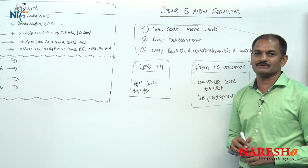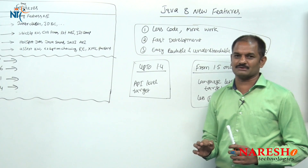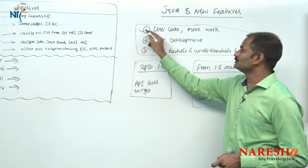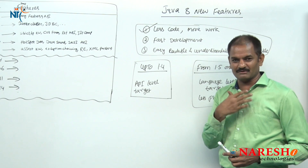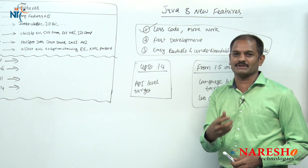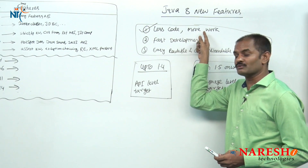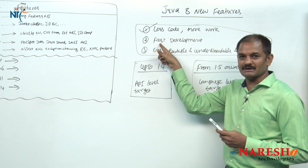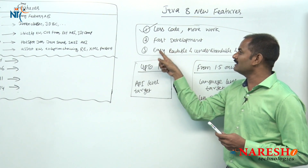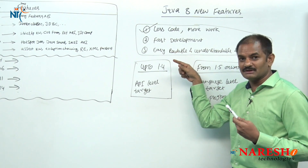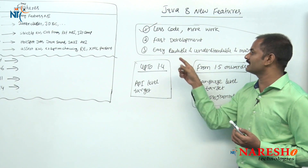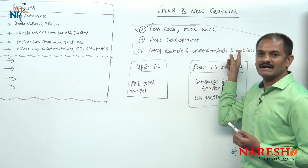Ultimately what I want to tell you: Sun Microsystems has given a promise to all programmers — write less code and the remaining work we will take care of. You do not try to write everything; we will provide it — try to reuse. Write less code, perform more work, fast development. Whenever you write less code, development is fast, and that code must be easily readable — not in complex syntax, small syntax, easily understandable, readable, understandable, and maintainable.